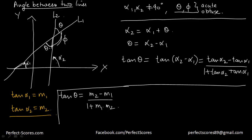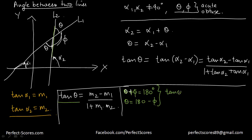If we are asked about the other angle phi, we know that theta + phi = 180 degrees because they fall on a straight line. So theta = 180 - phi, which means tan(theta) = tan(180 - phi). Now, tan(180 - phi) = -tan(phi), since sin(180 - phi) = sin(phi) and cos(180 - phi) = -cos(phi).